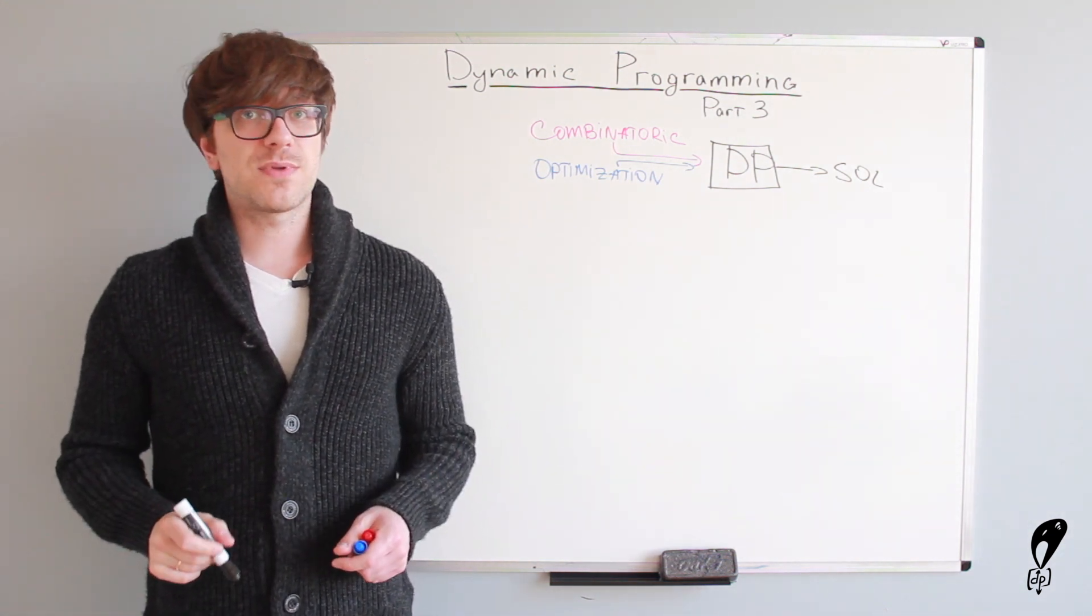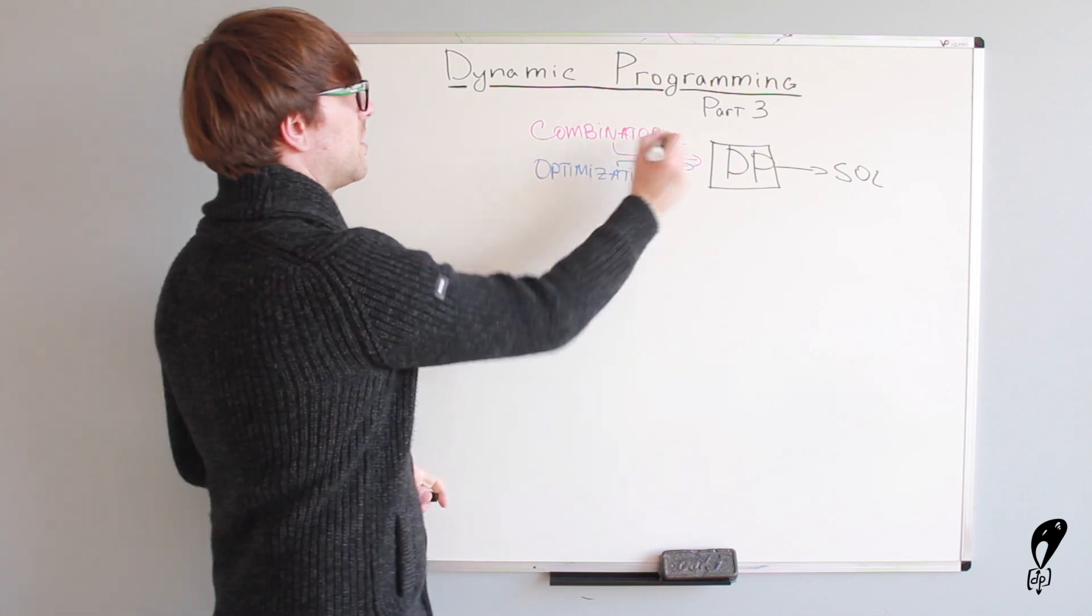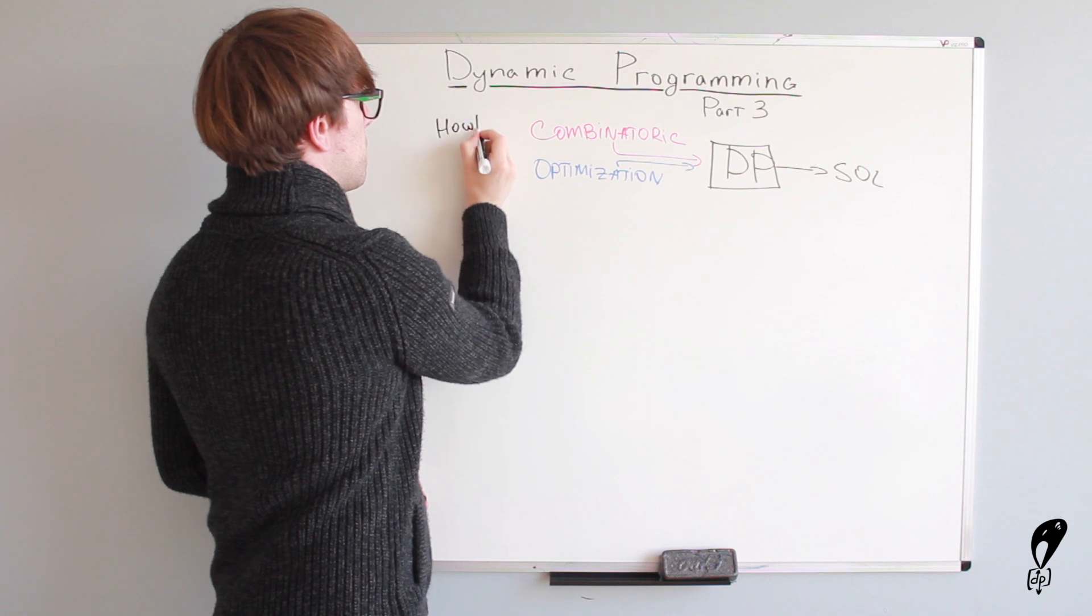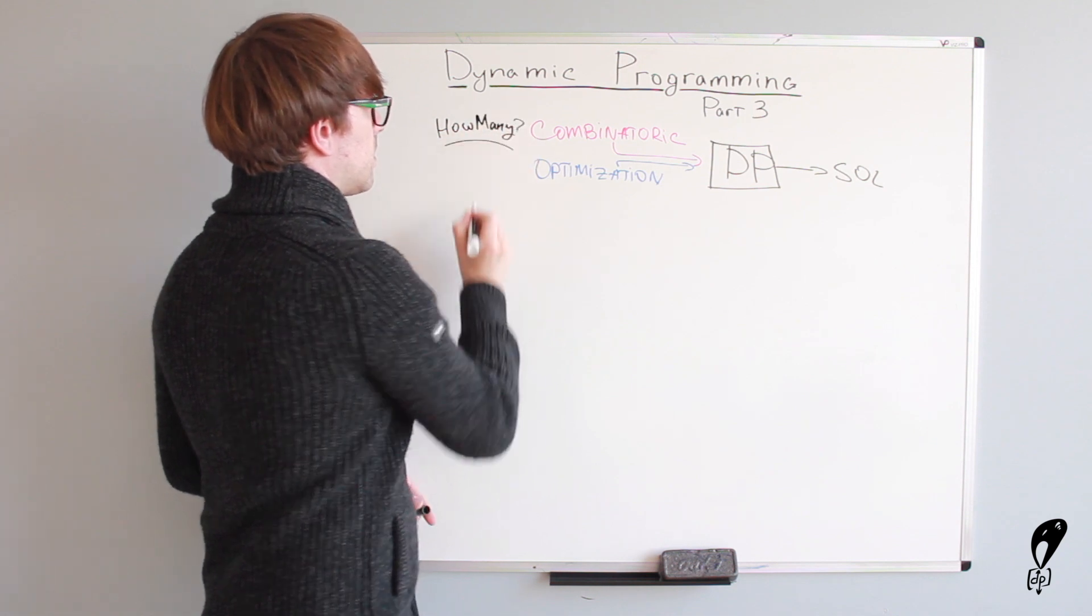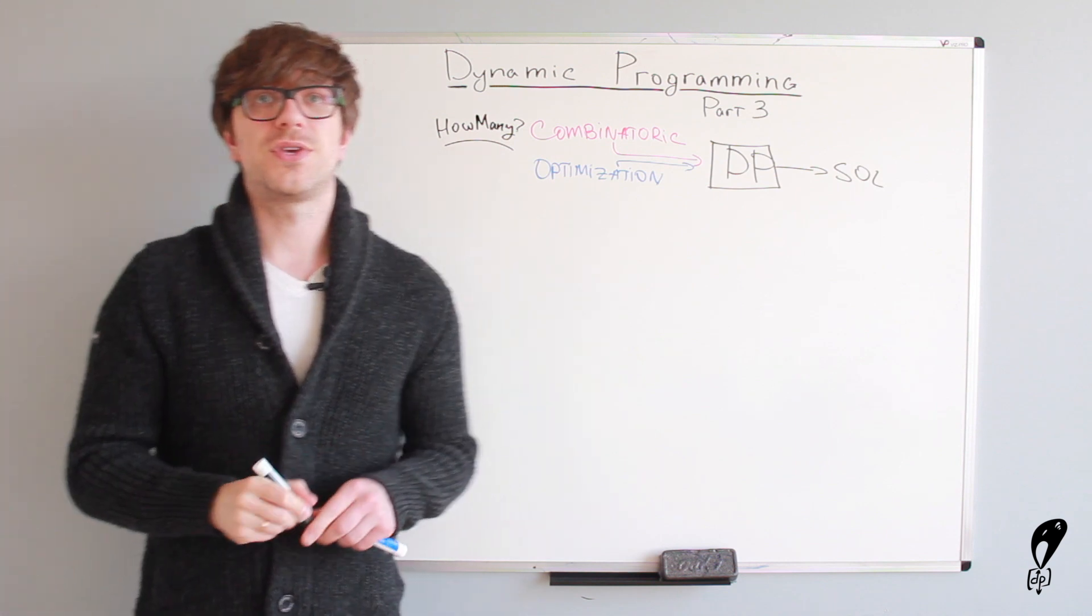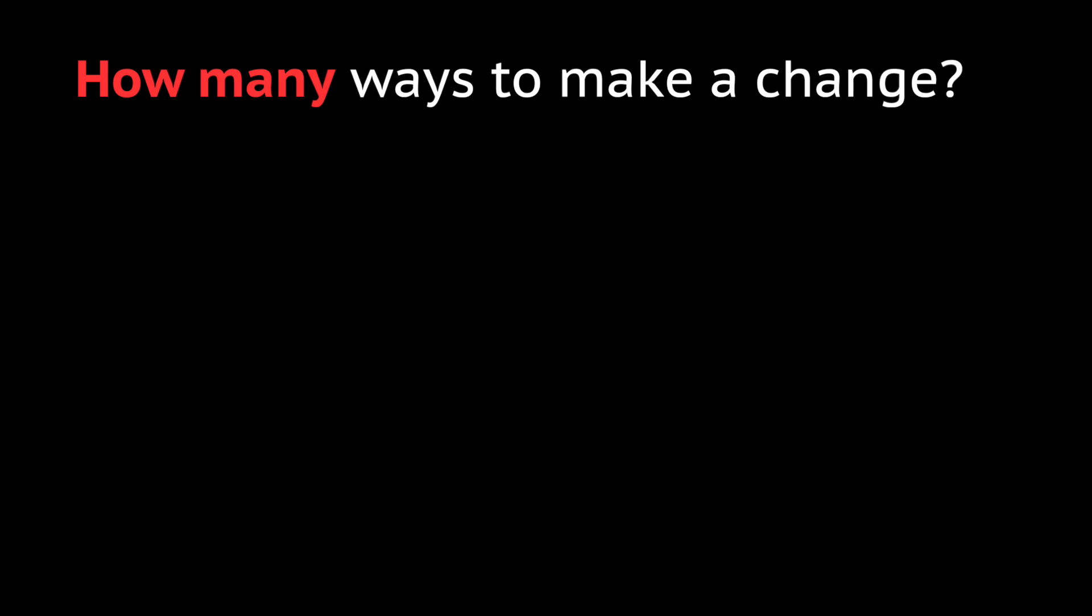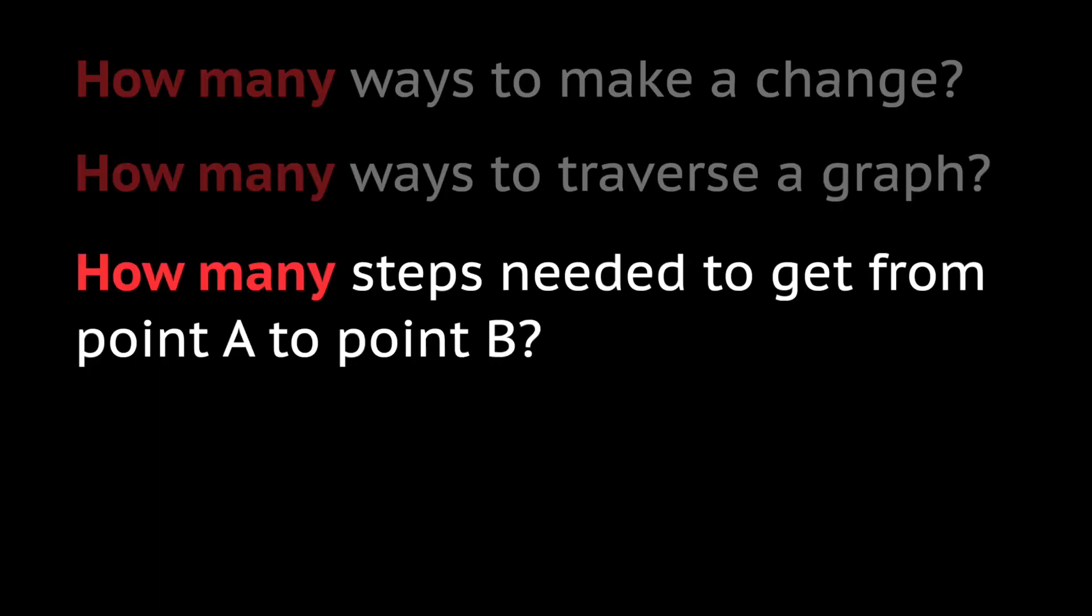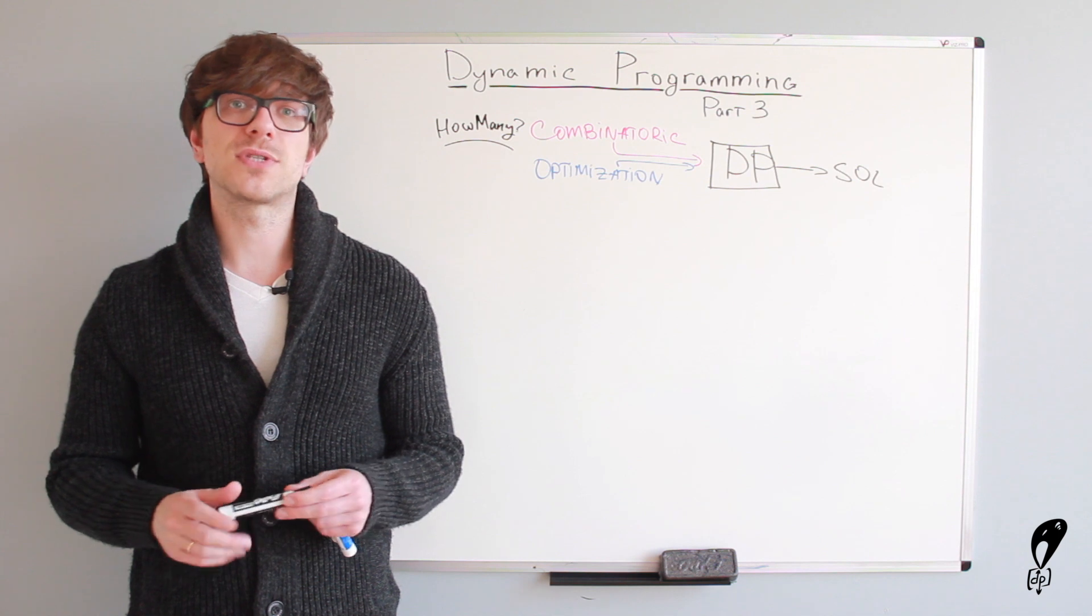Combinatorial type of problems ends with the question, how many? Here are a few examples of combinatoric problems. How many ways to make a change? How many ways to traverse a graph? How many steps needed to get from point A to point B? In this type of problems, your end goal is to count something.